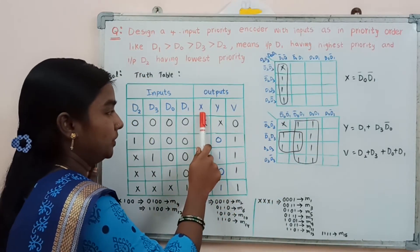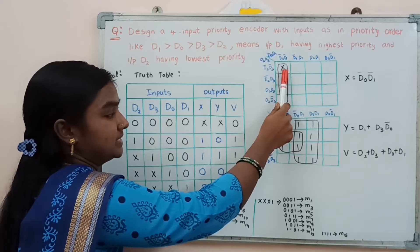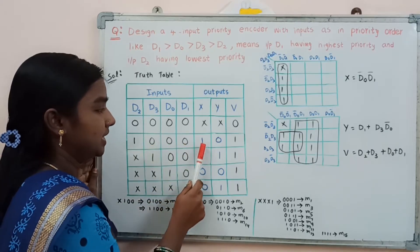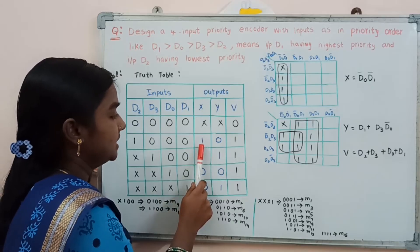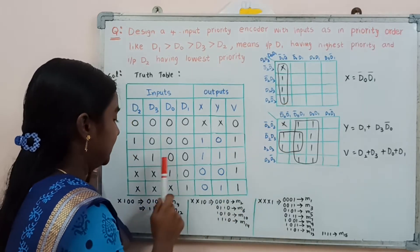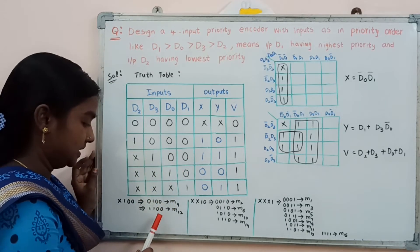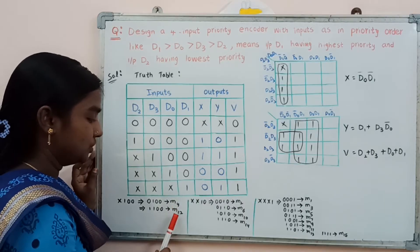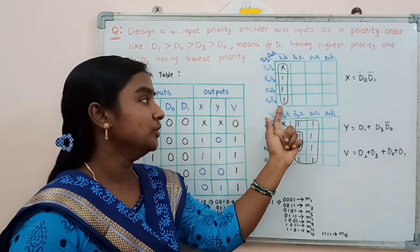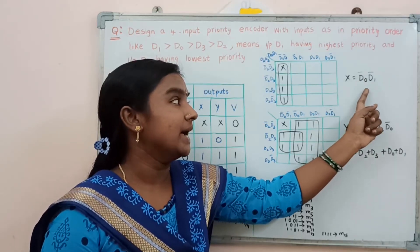Considering the x output: for the first combination we write don't care. For the combination 1, 0, 0, 0 it has a 1, which corresponds to minterm m8, so 1 is placed there. For the don't care, 1, 0, 0 combination, it gives 2 combinations, so 1 is assigned at those two positions. By combining all the 1s and don't cares, the boolean expression is: x equals d0 complement AND d1 complement.